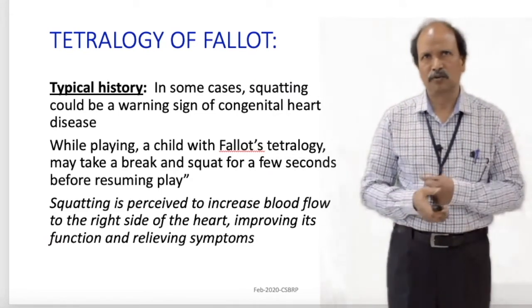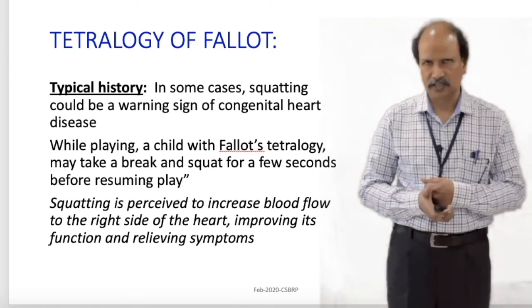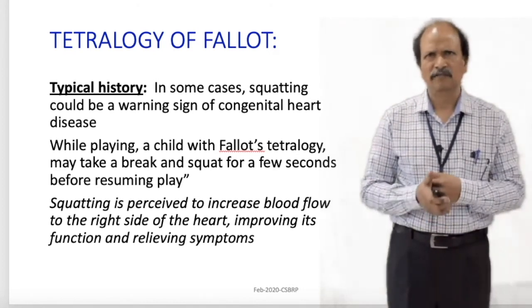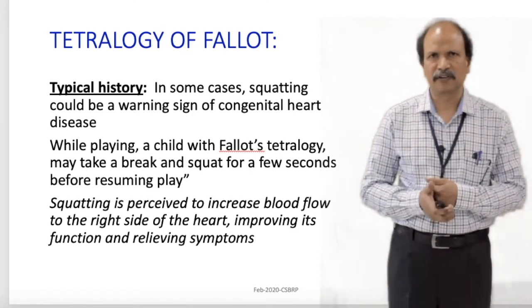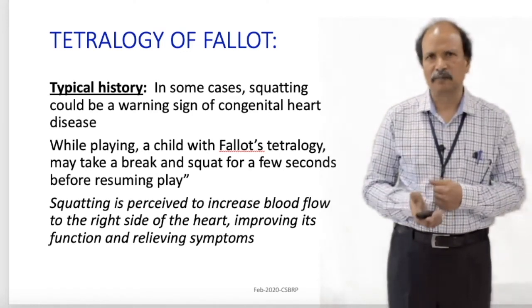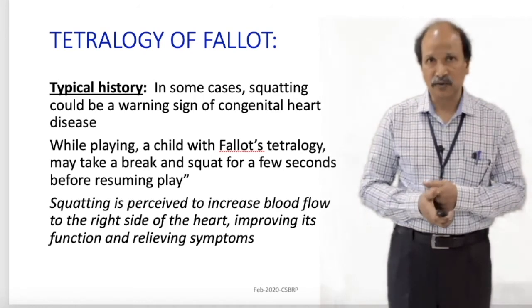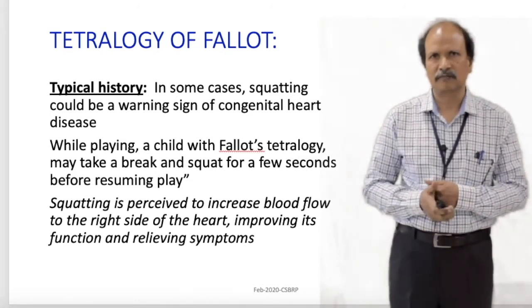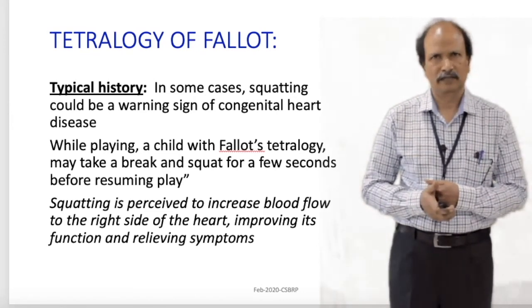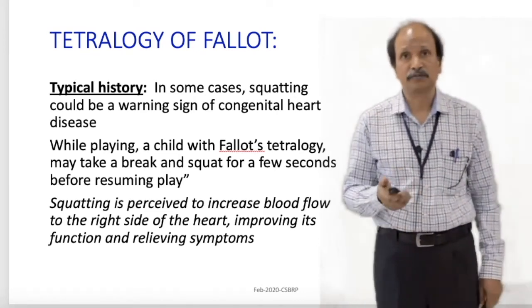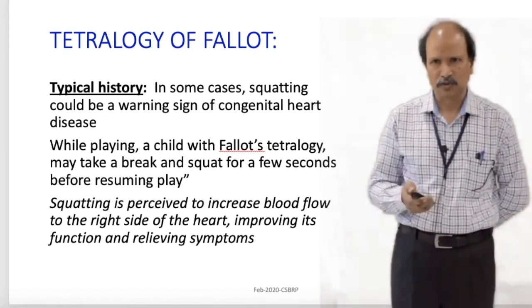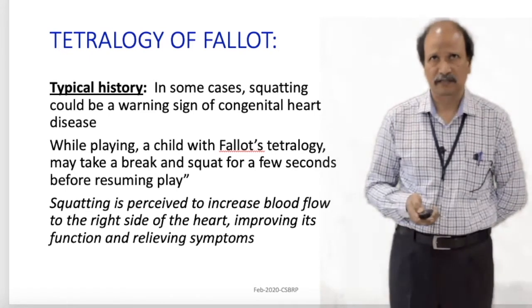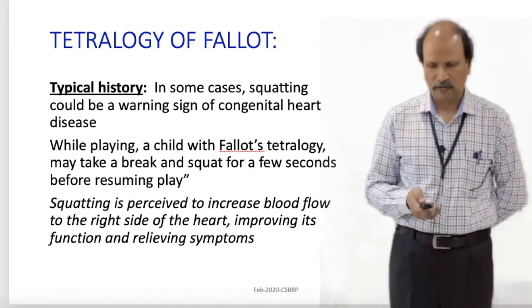One more important clinical clue to the existence of tetralogy of Fallot in a child is that the parent will give a typical history. While playing, the child takes a break and squats for a few seconds, then resumes playing. This is typically seen in tetralogy of Fallot. The squatting compresses the femoral arteries, which increases pressure on the right side so that there is effective pulmonary circulation, associated with increased oxygenation of blood, thereby relieving the symptoms to a certain extent.